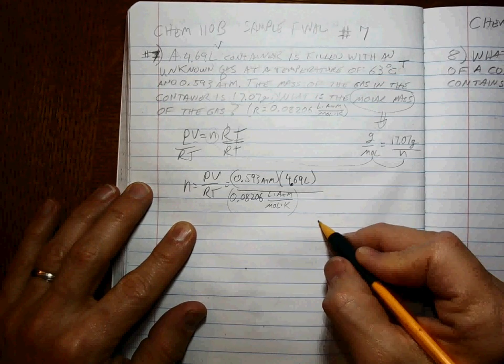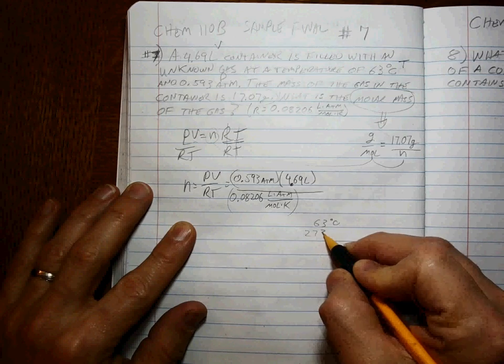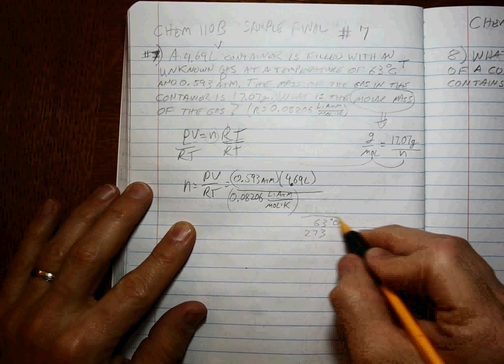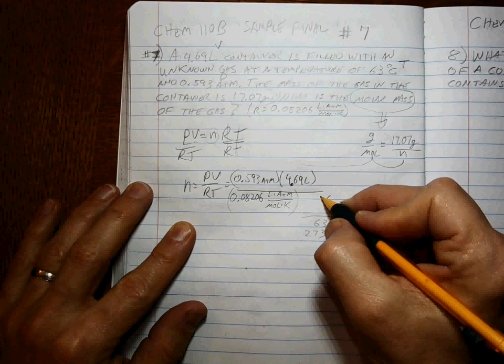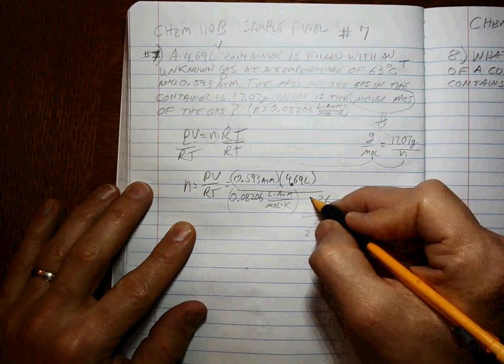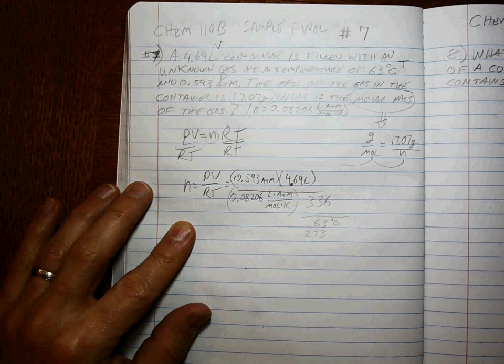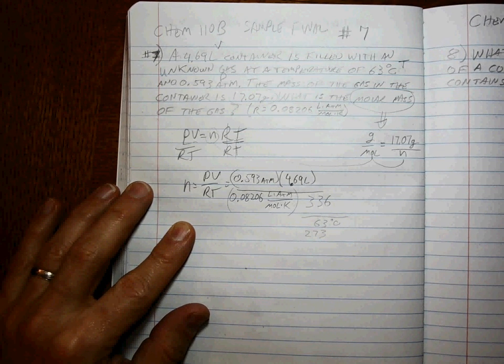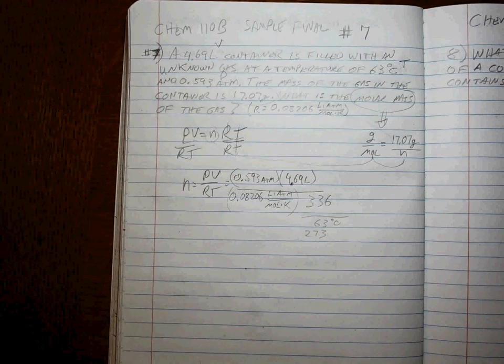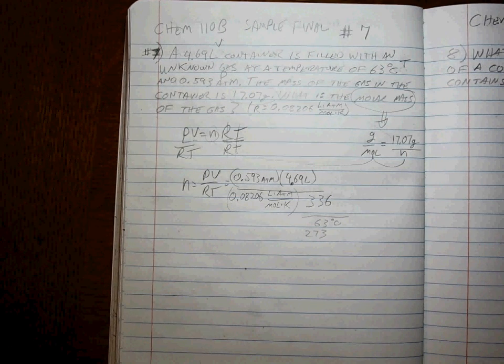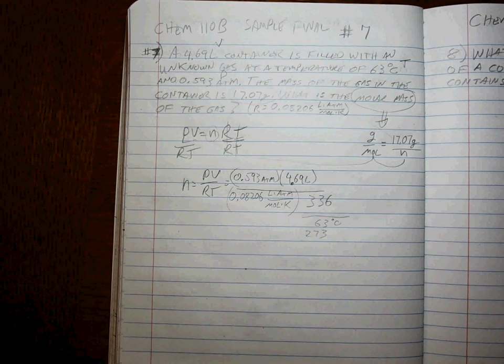That's why, when we have 63 degrees C, we have to add 273 to it to get 336 for the temperature. Right? It's got to be in Kelvin. If you're not in Kelvin, you're not going to get it right.